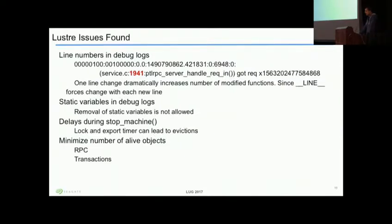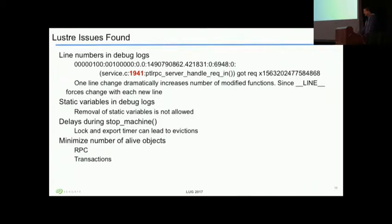Looking at Lustre issues found while applying k-patch: our goal was a proof of concept demonstrating no active process in queue, and we could apply it even with I/O going on. K-patch uses a diff, and in debug logs there's a macro __LINE__ — this macro changes for every line, resulting in the patched module being very large. A large patch module takes a long time to insert, which has side effects. Even changing one small line caused many entry points to be touched.